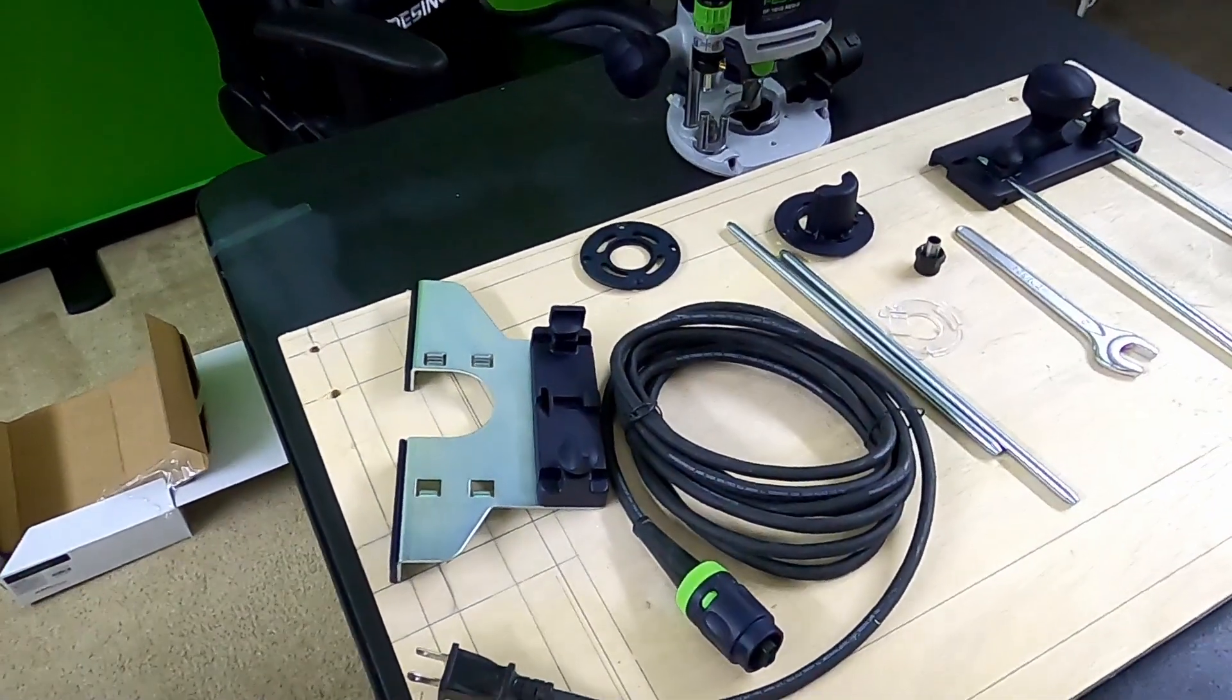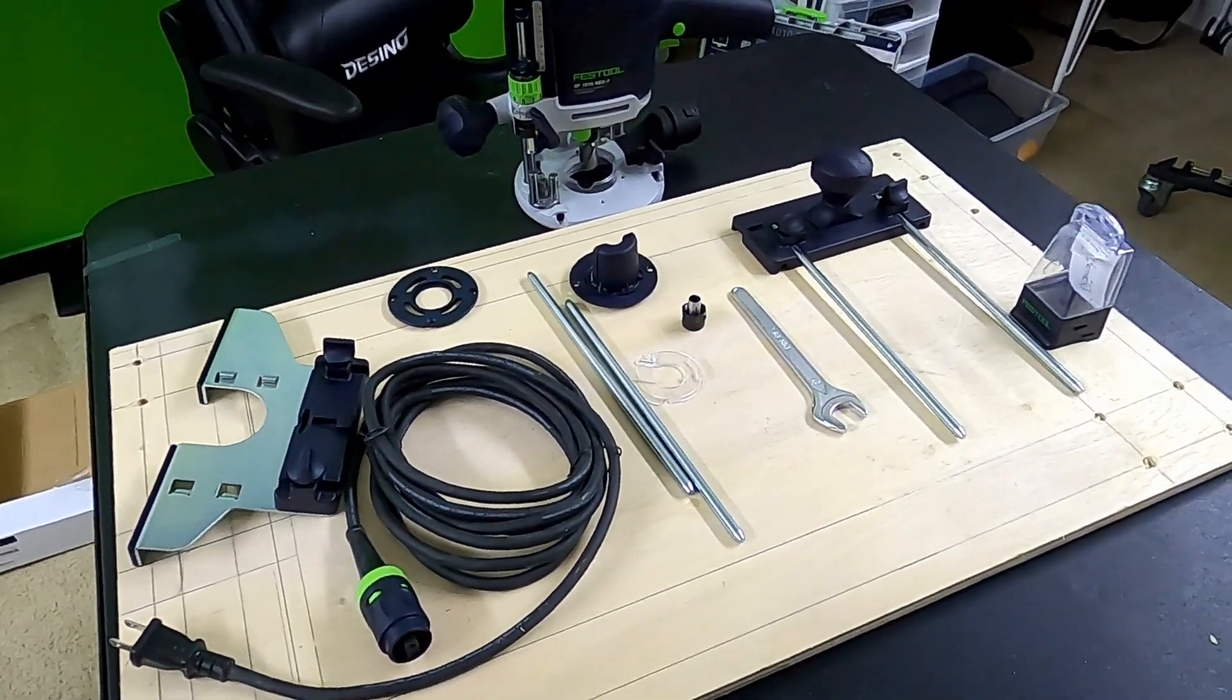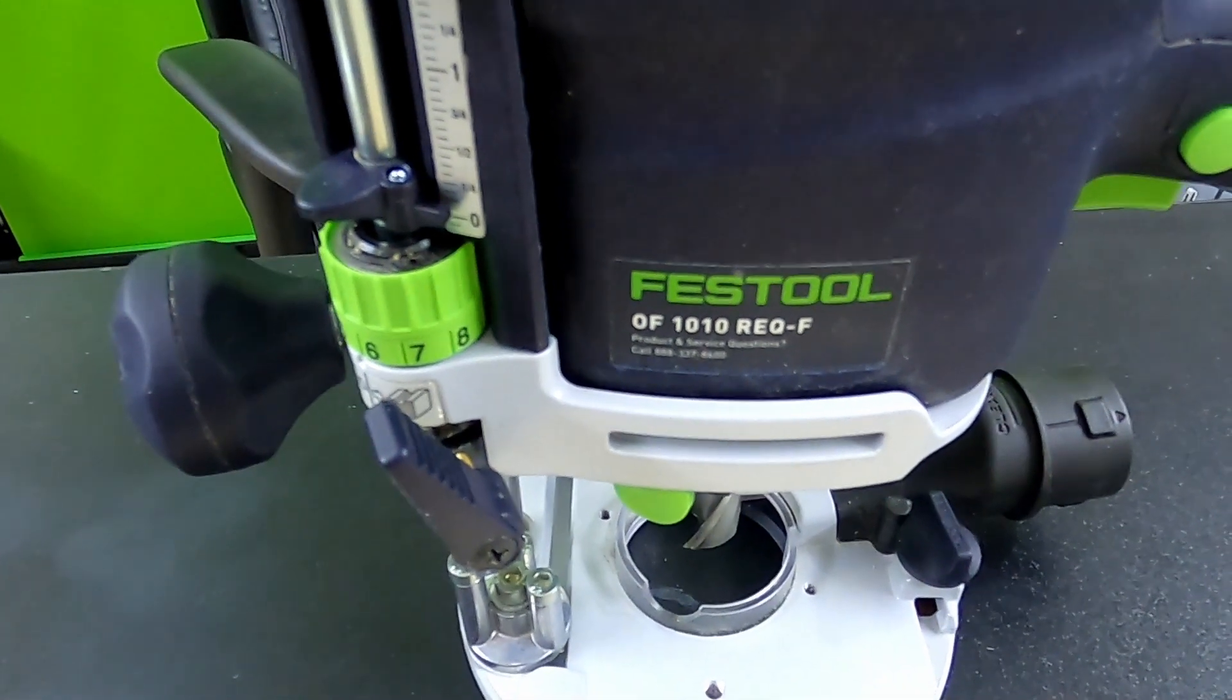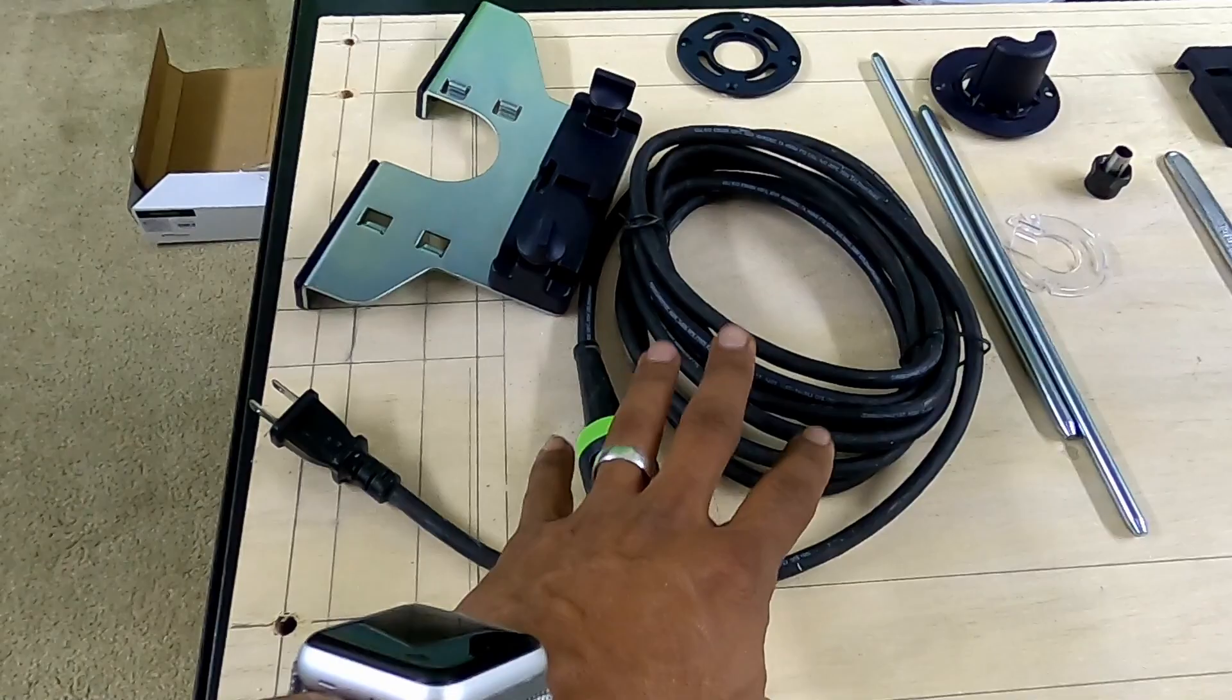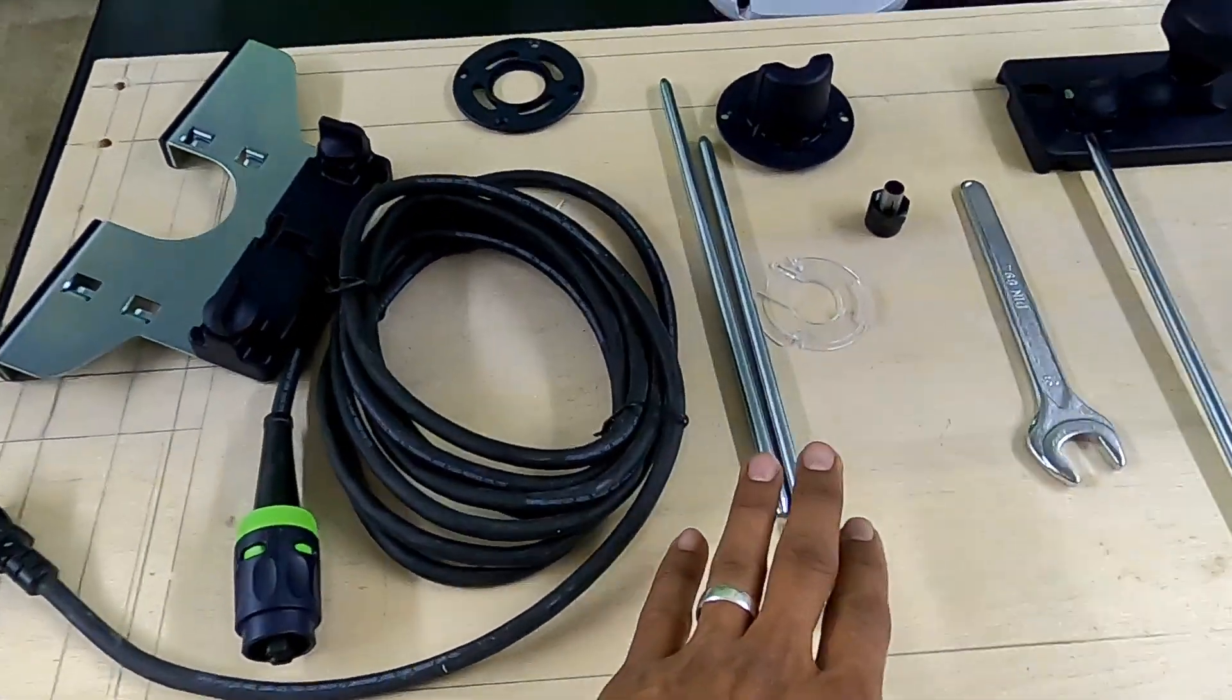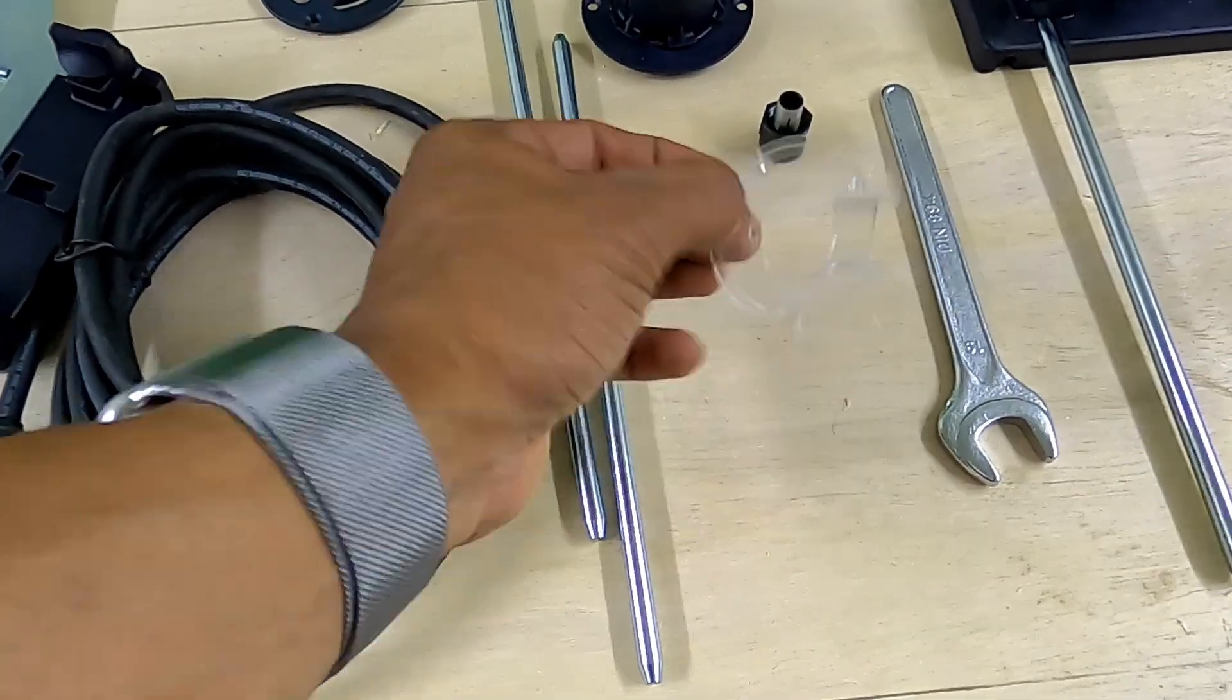All right guys, welcome back to my channel. This here is my newest router edition, the Festool OF 1010 REQ router. It comes with the plug-it cord, two rods, and several other components.